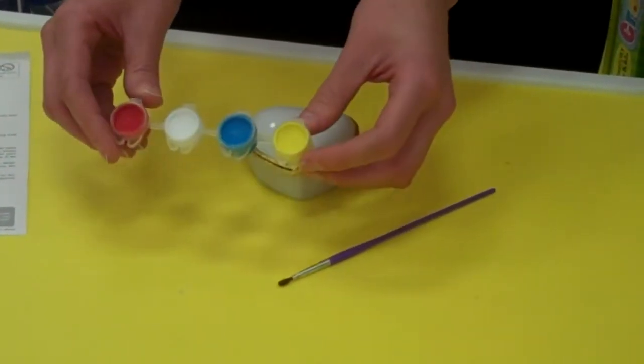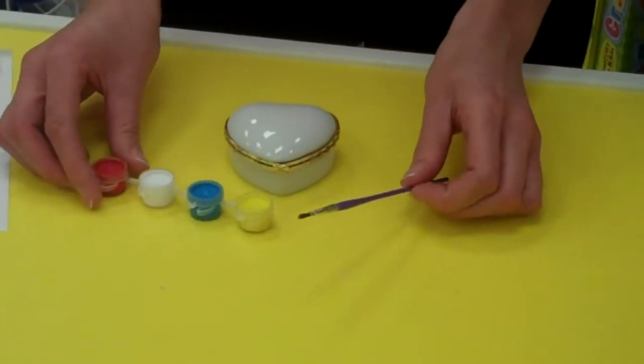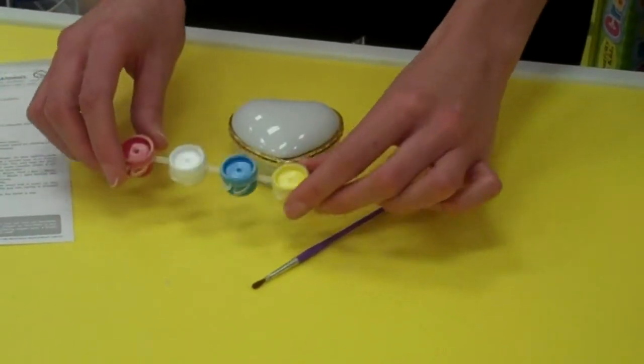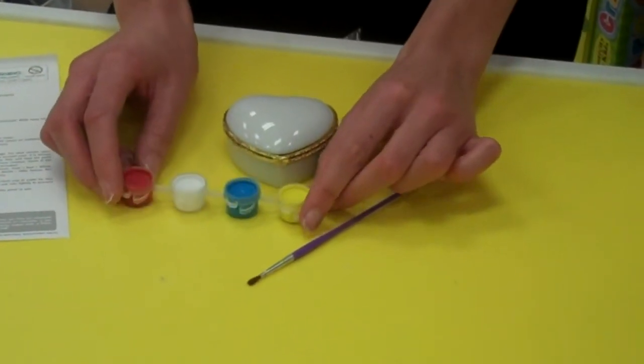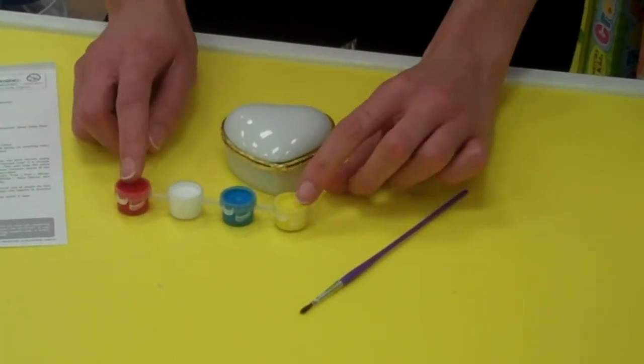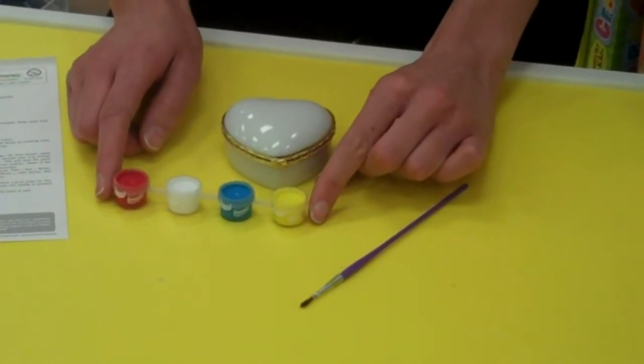You're going to get a set of four paints, a paintbrush and your instructions. In the instructions it just tells you that the paint is very easy to use. You get a small brush so you can actually do small details. It encourages you to mix your paints together for different colors.